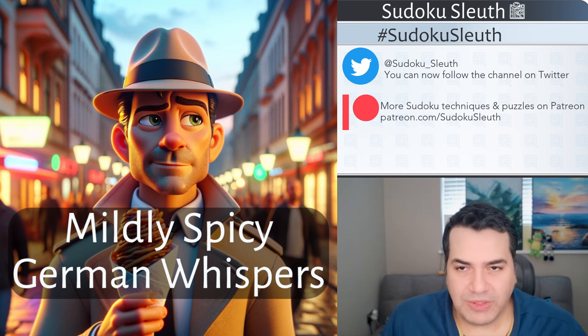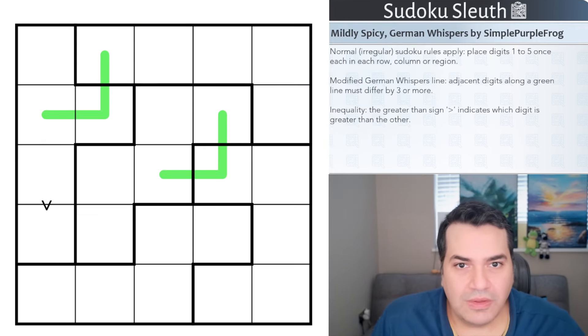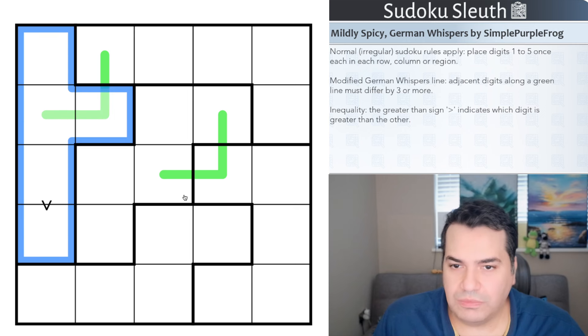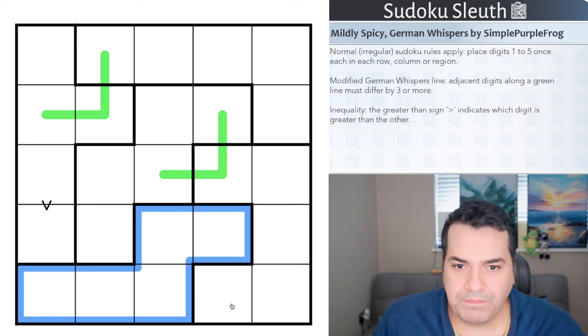Let's take a look at today's puzzle. Mildly Spicy German Whispers by SimplePurpleFrog—what a cool name. Normal irregular Sudoku rules apply, so that means place the digits one to five—oh, it's not even six by six, it's five by five—once each in every row, in every column, and in every region. You can see that the regions look fairly different for each of, I'm guessing, five regions.